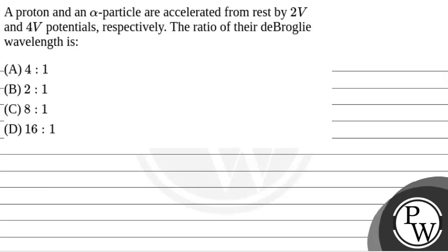Hello Bacho, let's read the question. A proton and an alpha particle are accelerated from rest by 2 volt and 4 volt potentials respectively. The ratio of their de Broglie wavelength is. So we will solve this question.